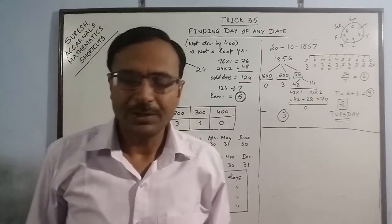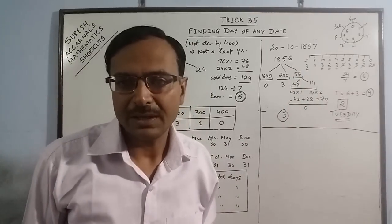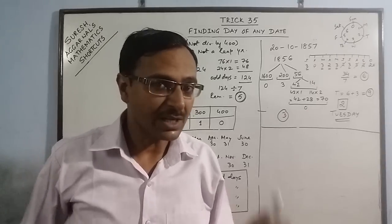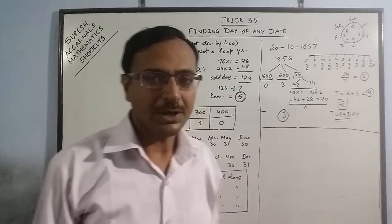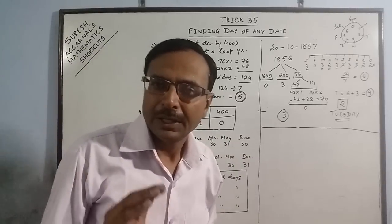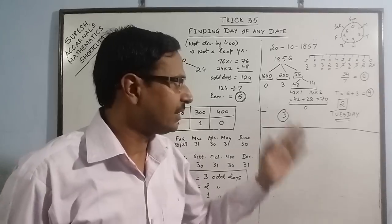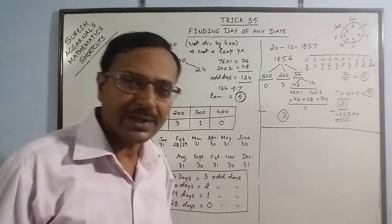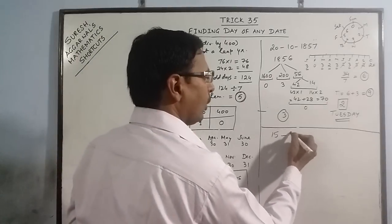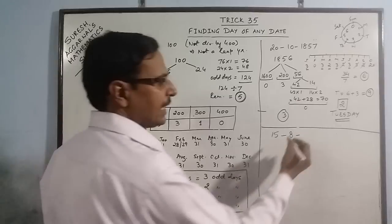This seems a bit complicated, but you have to practice at least 8 to 10 problems of this kind so that you can grasp this trick and reduce your calculation time. Now let us take one example of a leap year — 15th August 1956.